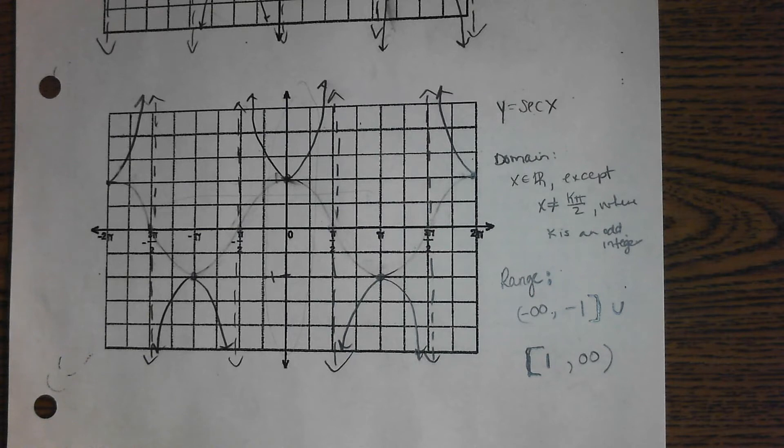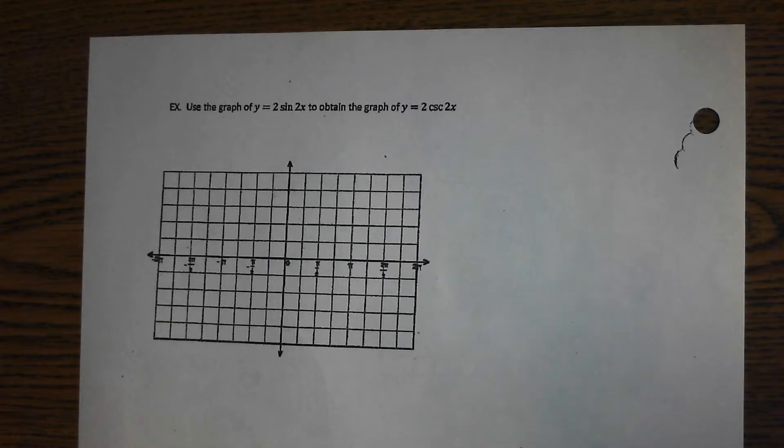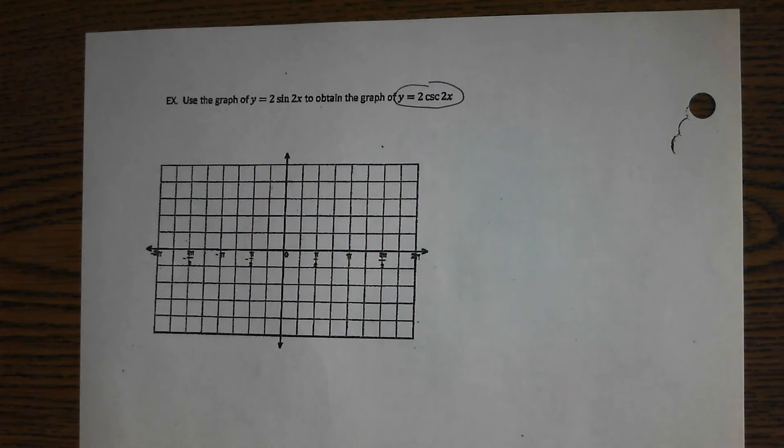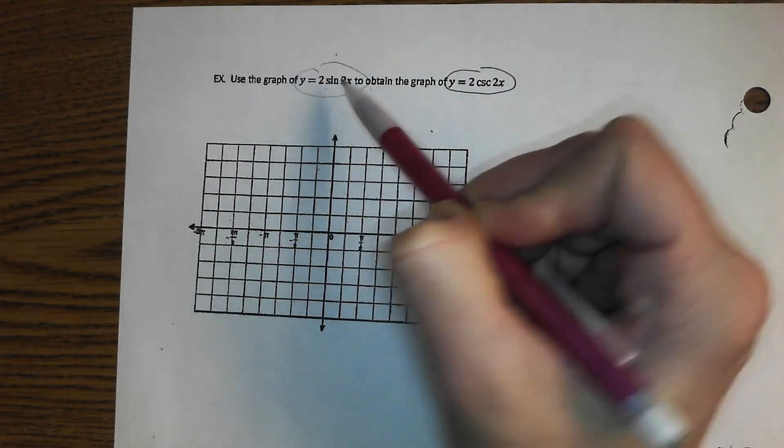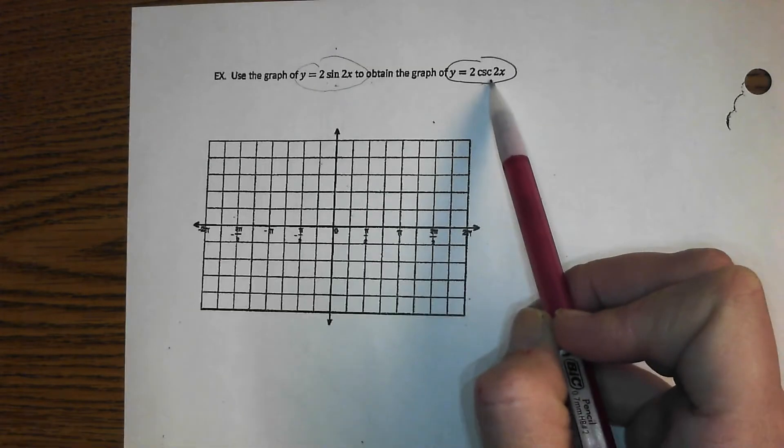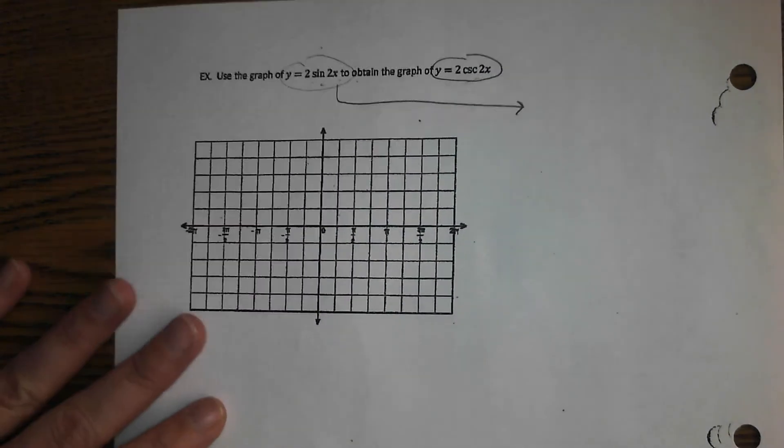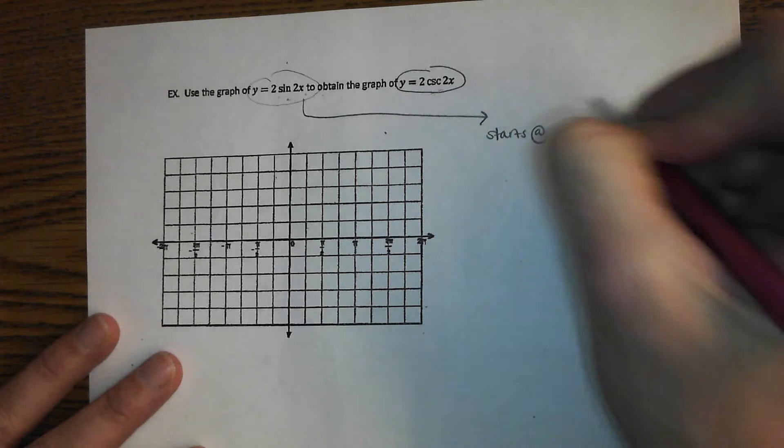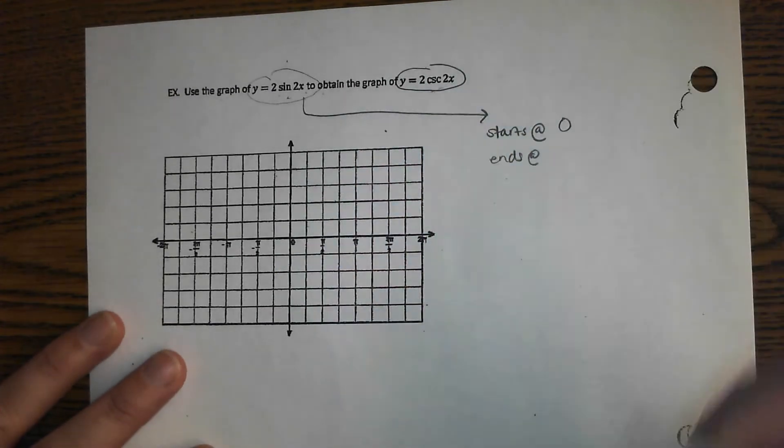And the secant or the cosecant one from above is similar. Okie doke. Any questions? Alright, so on the back essentially, and they're not going to normally give you these instructions they're just going to say graph this. Graph 2 times the cosecant of 2x. What you have to know is if you're graphing a cosecant you want to graph the sine version of that so that's where they kind of elaborate here. Use the graph of this to obtain the graph of 2 cosecant of 2x. So, forget this for now and let's just focus on 2 sine of 2x. Where does this start? Is there any phase shift?